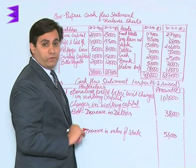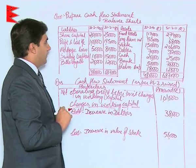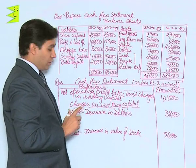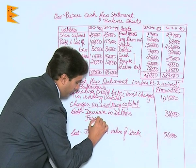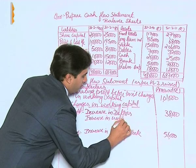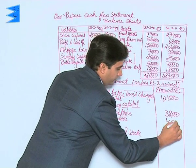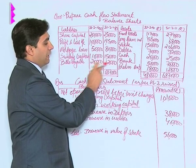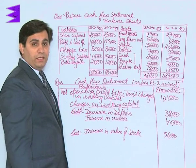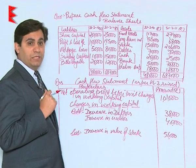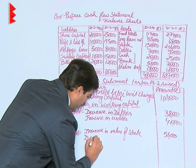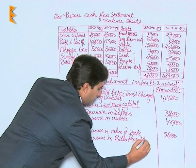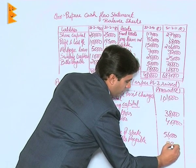Preliminary expenses are not part of current assets. Coming to current liabilities: we have sundry creditors and bills payable. The value of creditors has increased by ₹40,000 — since current liabilities are increasing, it will be added: increase in creditors, ₹40,000. Bills payable have decreased by ₹8,000 during the year, meaning payment has been made. A decrease in current liabilities is subtracted: decrease in bills payable, ₹8,000 (in brackets to indicate subtraction).